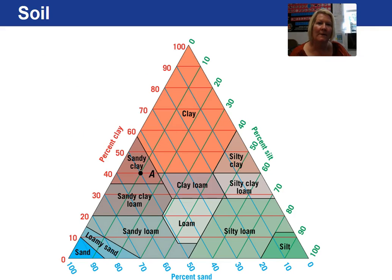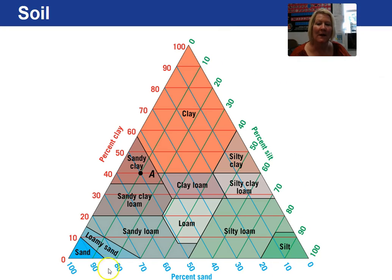There are various soil classification systems. This diagram is the United States Department of Agriculture soil classification system. This figure is called a ternary diagram, and you plot the percentages of clay, silt, and sand on these ternary diagrams, and where they intersect will tell you the type of soil you have.